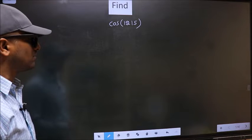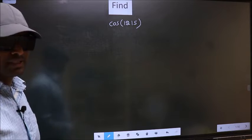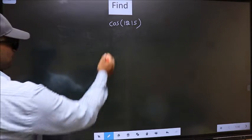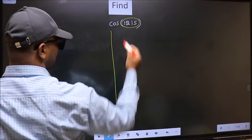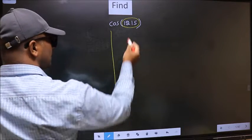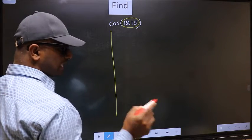Find cos 1215. To find this, we should follow this method. Here we have 1215. Now you should check 1215 lies between which two multiples of 180.